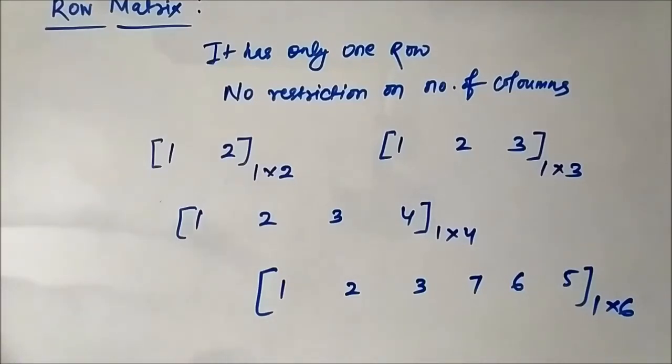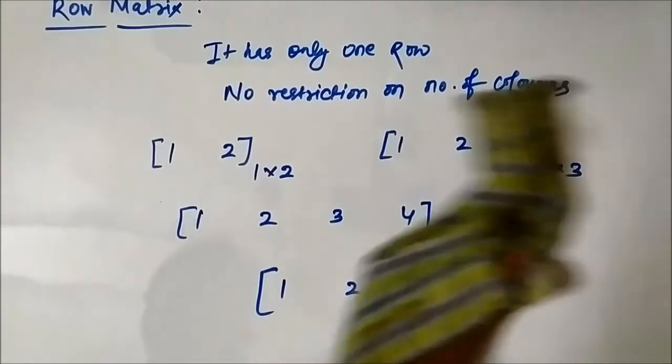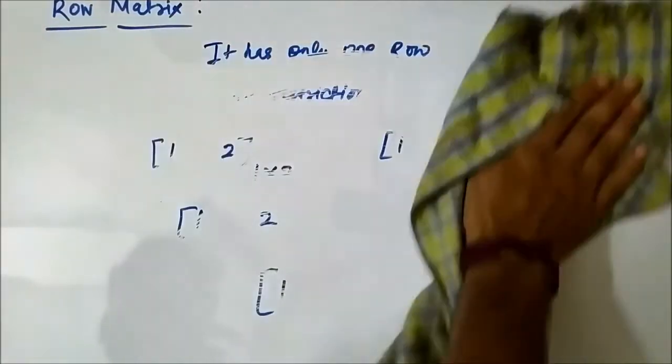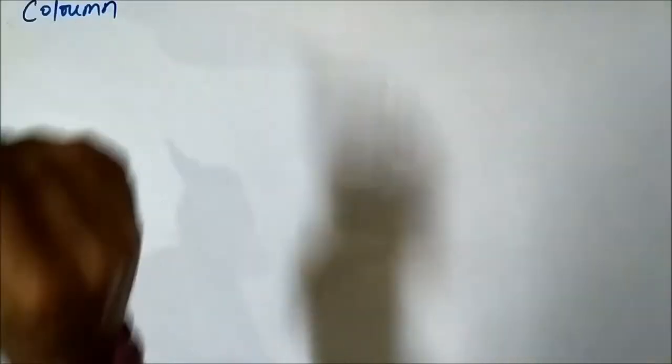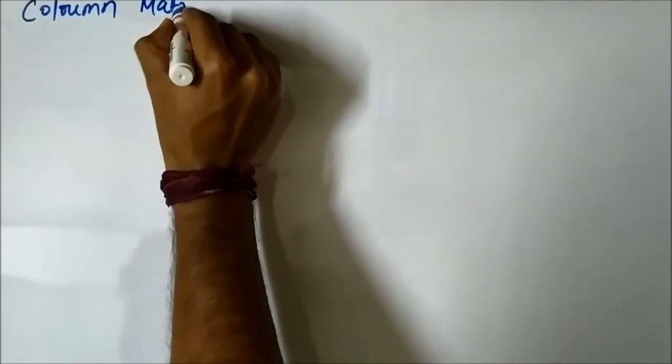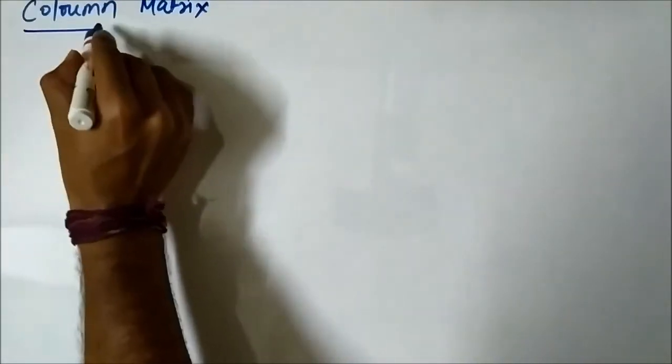Next, the next type is the column matrix. So the column matrix, by the same concept, the analogy that we used in row matrix for defining a row matrix we'll use the same, but here the restriction is on the number of columns.